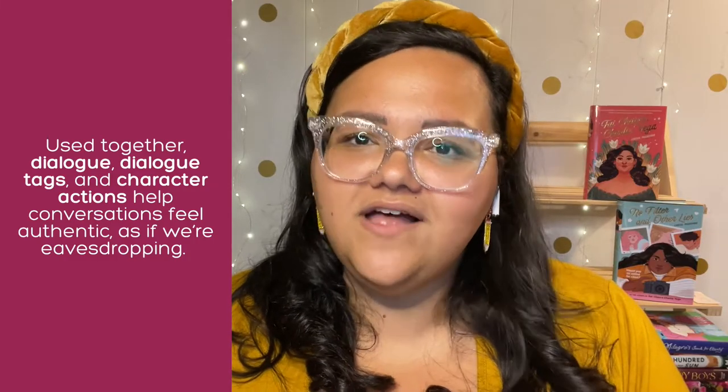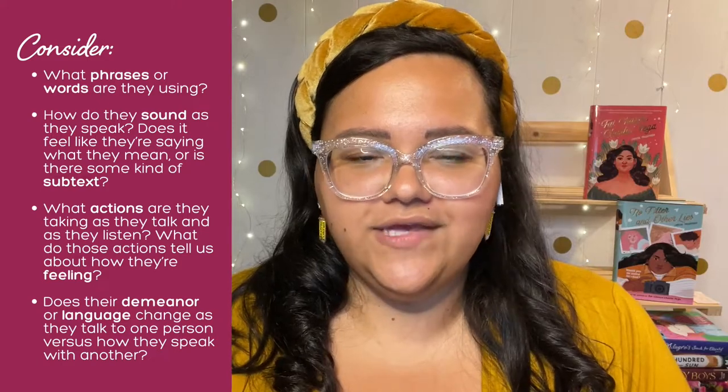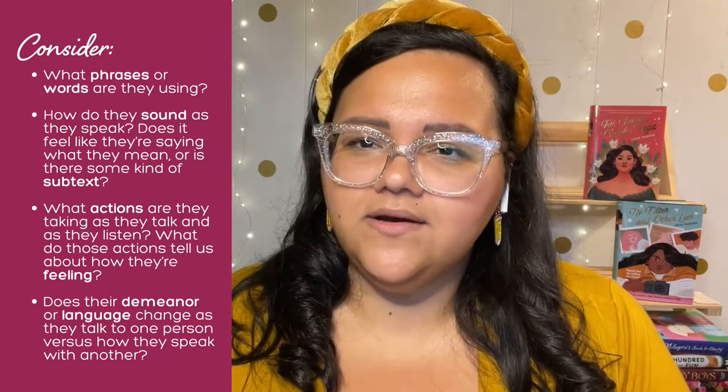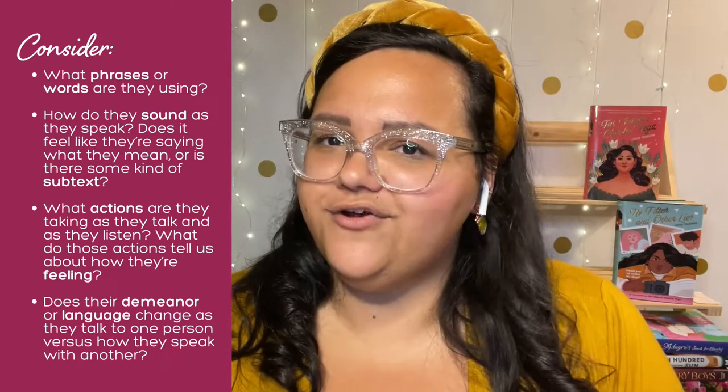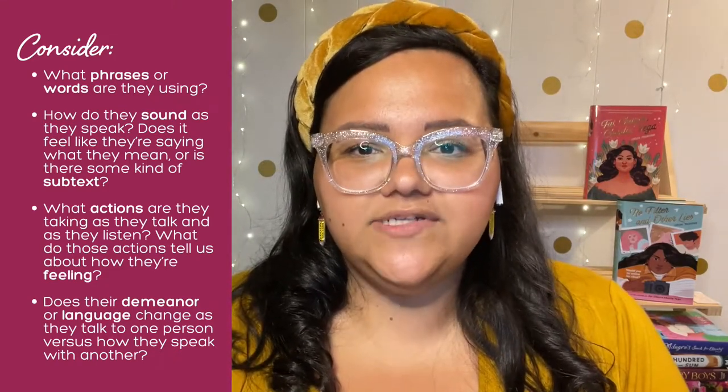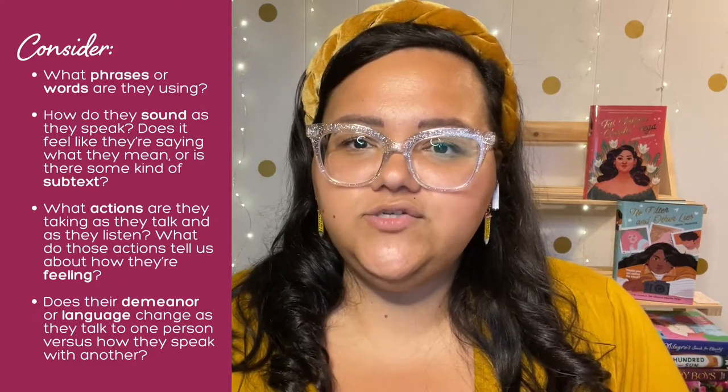Used together, dialogue, dialogue tags, and character actions all work to create a conversation that feels authentic — as if we're eavesdropping. One way you can get good at not just spotting these changes but writing them is to eavesdrop in real life. Next time you're in public, listen in on the conversations around you. As you listen, consider: what phrases and words are they using? How do they sound as they speak? Does it feel like they're saying what they mean, or is there some subtext we're missing? What actions are they taking as they talk and listen? What do those actions tell us about how they're feeling? Does their demeanor or language change depending on who they're talking to? Use what you hear as inspiration for your dialogue.